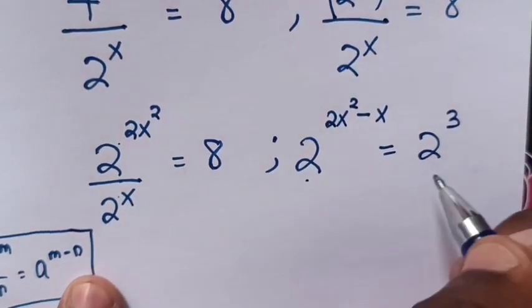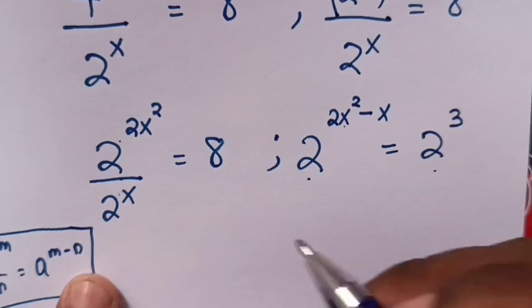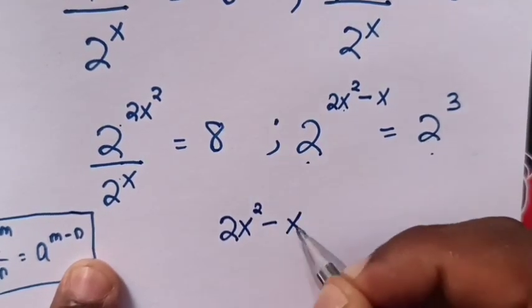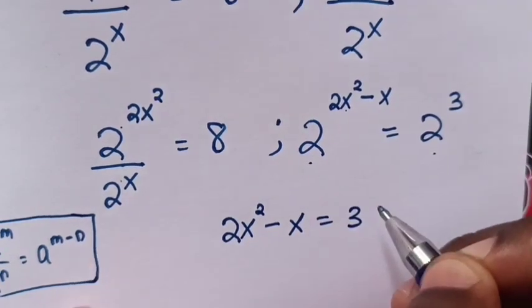Now we can see the same base but different powers, so we compare powers. So it will be 2x squared minus x equals 3.